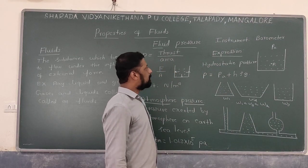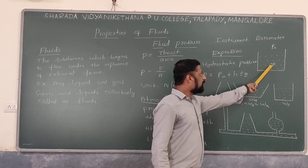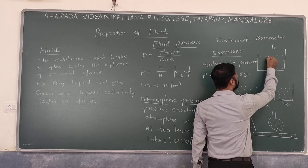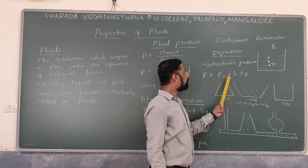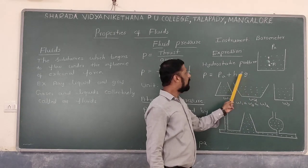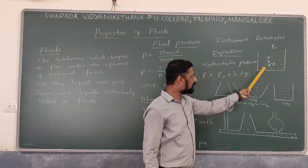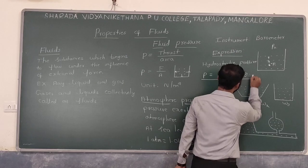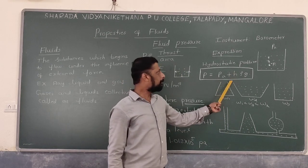Next, the expression for hydrostatic pressure. Consider a liquid in a container and a point P inside the liquid at a depth H from the surface. The pressure at that point is given by P = PA + HρG, where PA is the atmospheric pressure, H is the depth from the free surface, ρ is the density of the liquid, and G is the acceleration due to gravity.